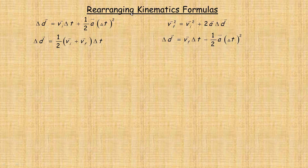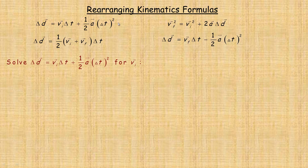In this video, we're going to take a look at rearranging some fairly common kinematics formulas. Here are four kinematics equations or formulas that we're going to work with. The first one we're going to solve for the variable v sub i — the initial velocity.